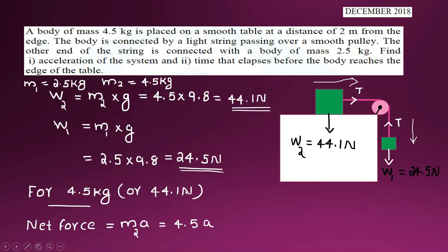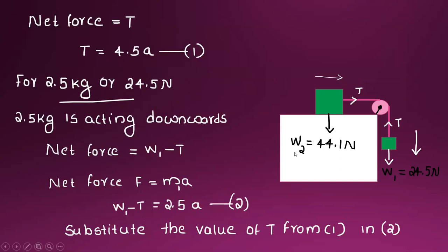For the 4.5 kg body on the table, the direction of motion is to the right side. The net force acting is tension T, so the equation is T equals 4.5 times a. This is the equation for the first body on the table.